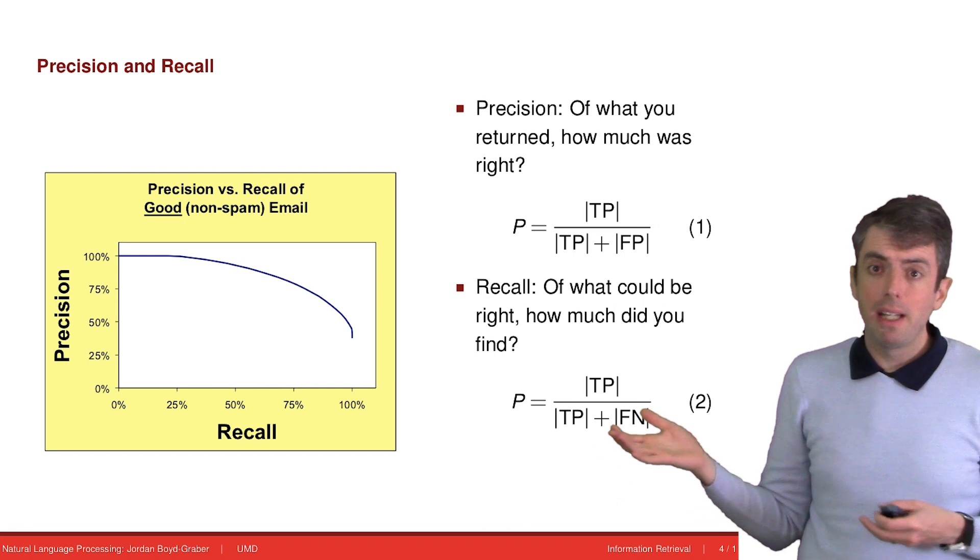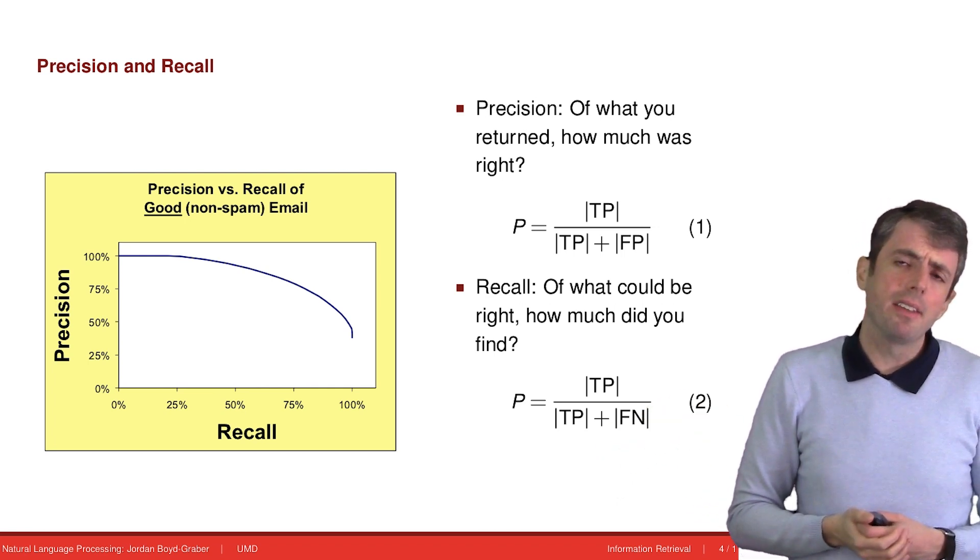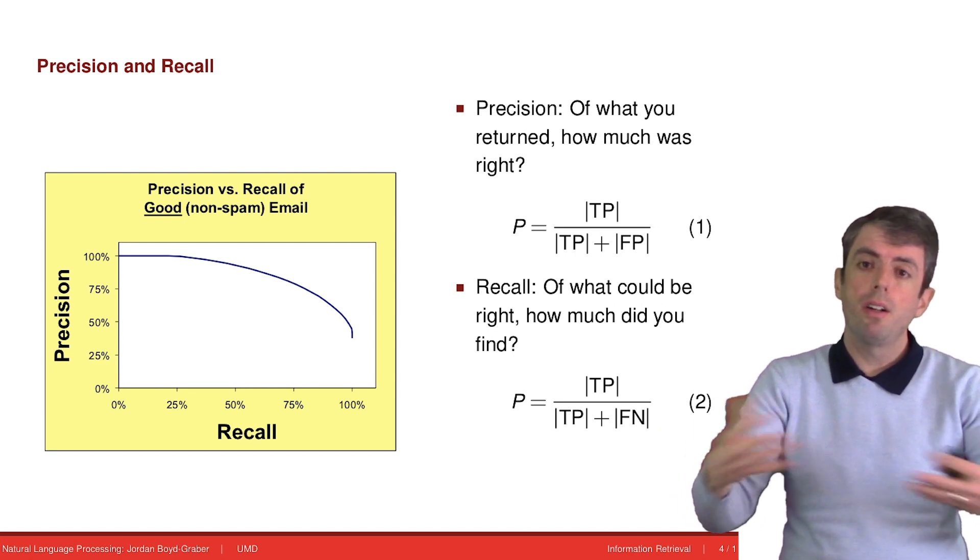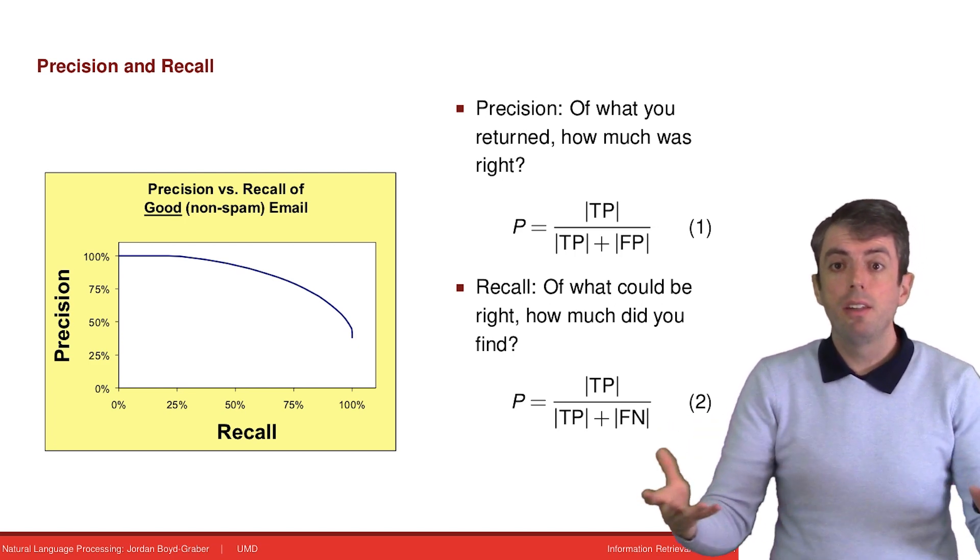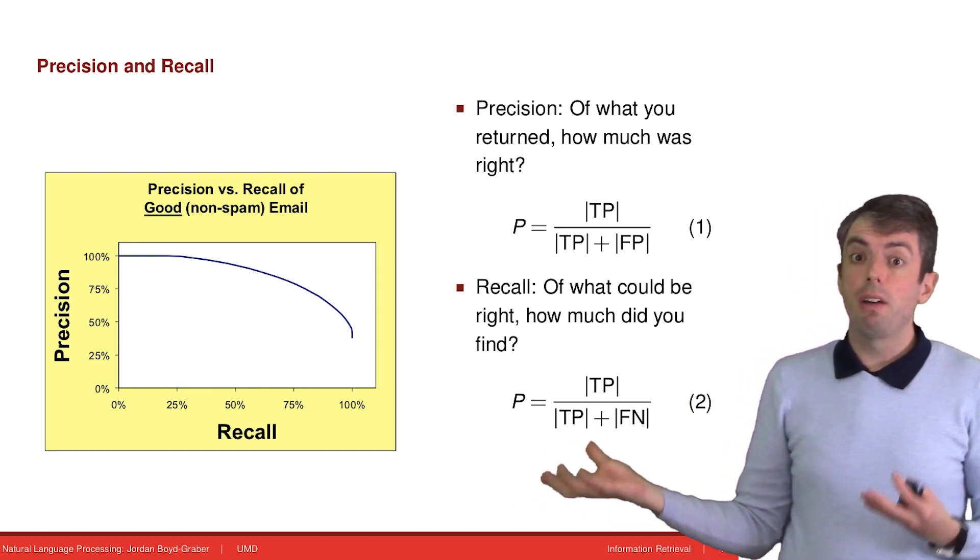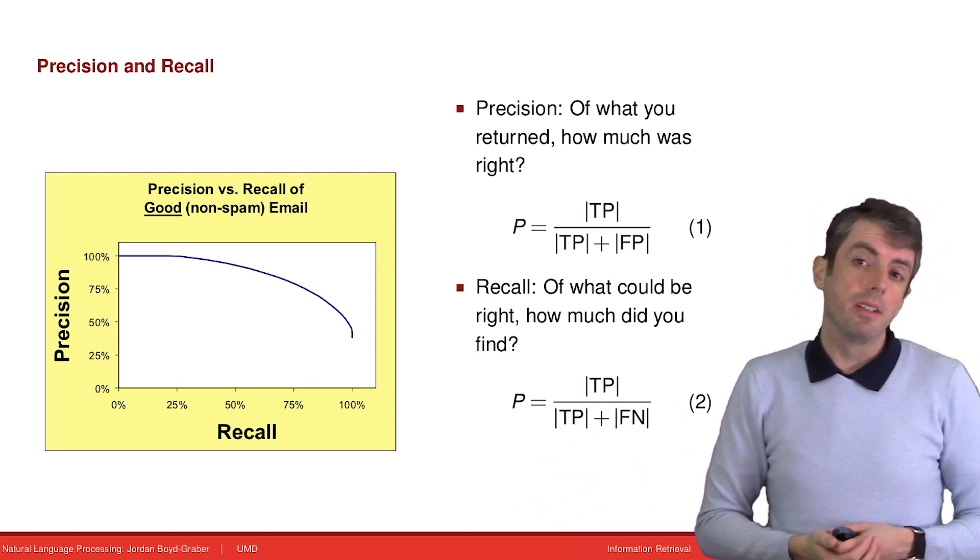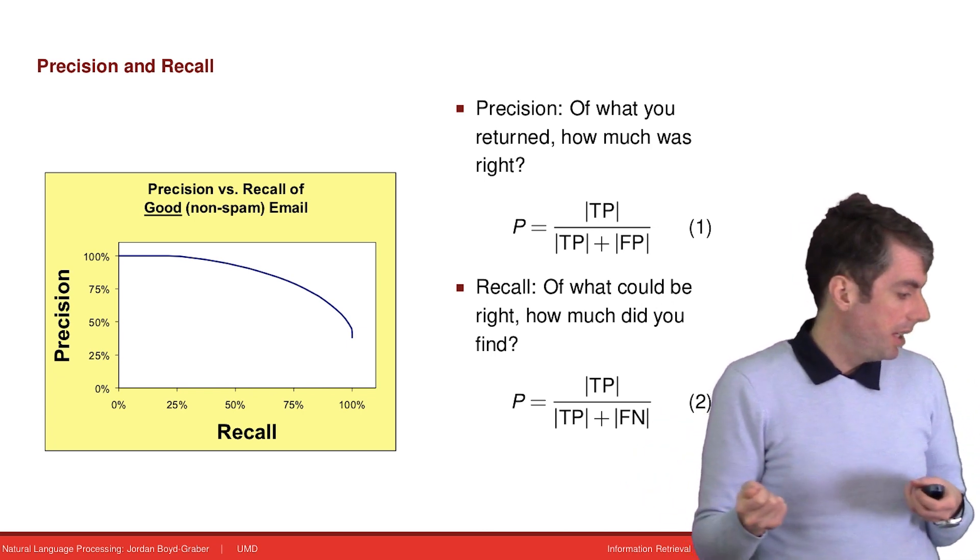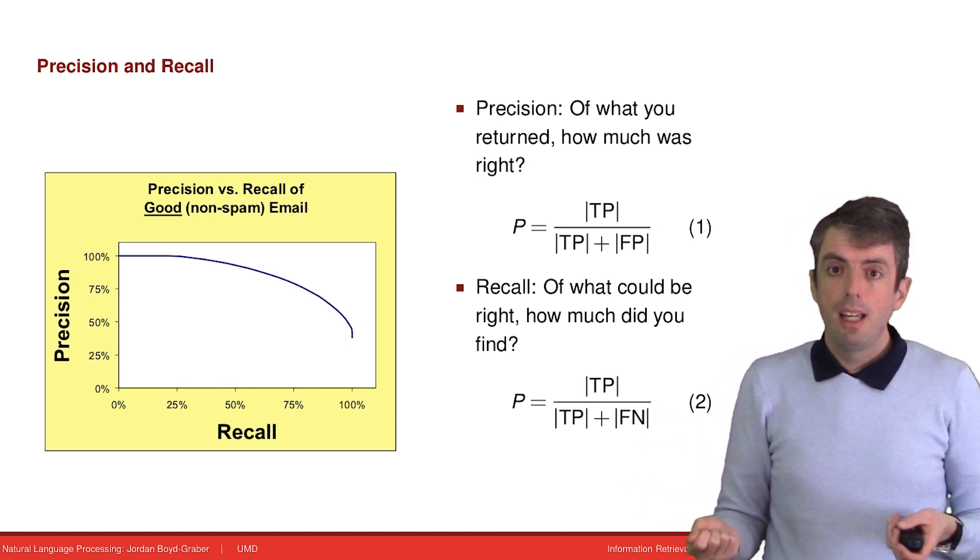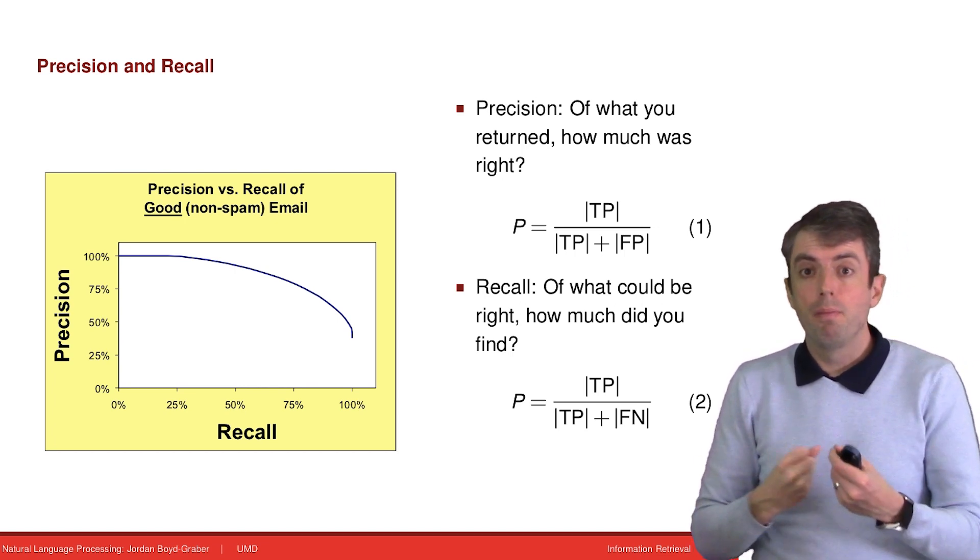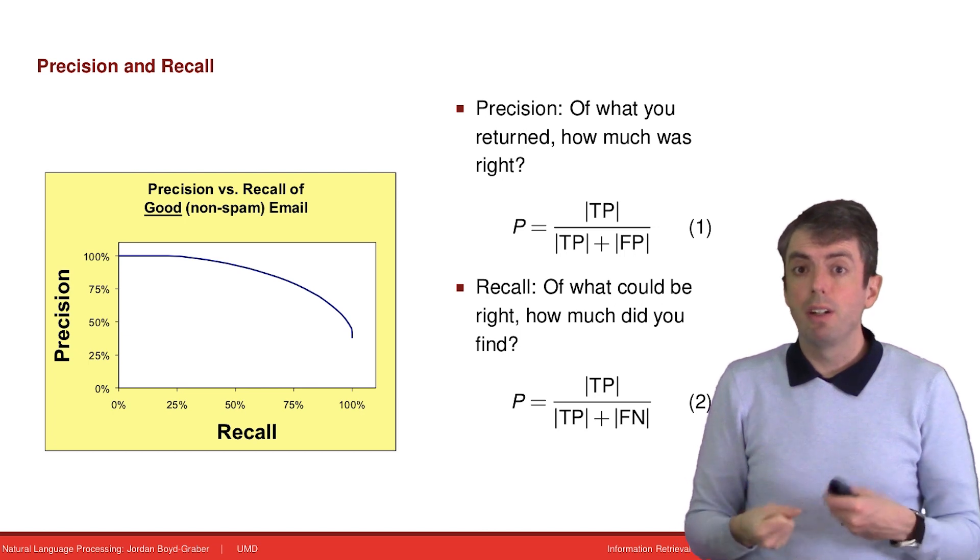But recall by itself isn't perfect either. If you just returned all documents and you said that all documents were relevant, then you would have great recall because of all of the relevant documents, you found all of them. But there's a lot of noise in there as well. Typically what you want to do is you want to balance between precision and recall and combine them in a way that balances off between precision and recall.